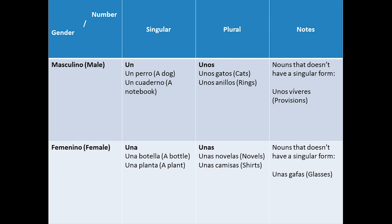As some remarks, I would like to say that as any rule we have some exceptions. There are some nouns that don't have a singular form, so we could use only unos or unas no matter if we talk about one or many of them. For example, unos víveres, unas gafas.